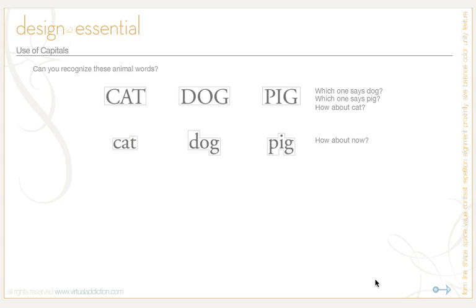You can probably figure it out because of the ascenders and descenders. As the words fade in, you can see that even without the full letters visible, you know that this says 'cat' because the T is the only thing that ascends. 'Dog' is going to have an ascender and a descender. 'Pig' has two descenders. It's interesting to be able to look at this.